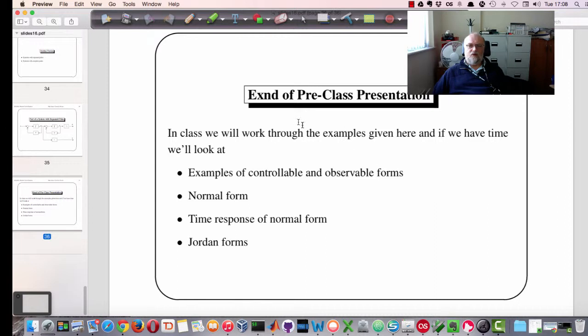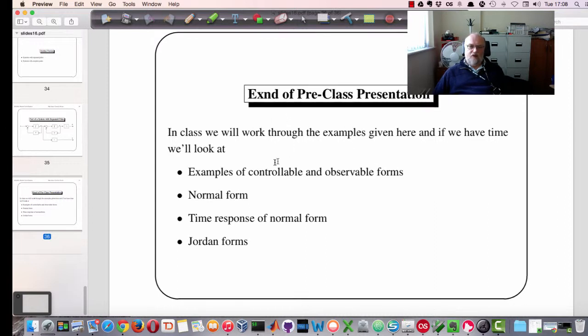And so that's basically what we needed to cover today. So this is the end of the pre-class presentation. In the class we'll actually look at some examples of those controllable observable forms. We'll look at the normal form and give an example possibly. And then we'll look at the time response normal form and the Jordan forms.